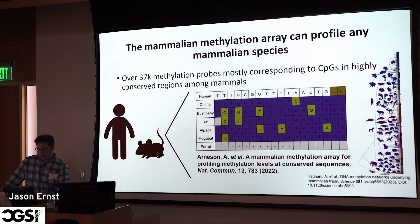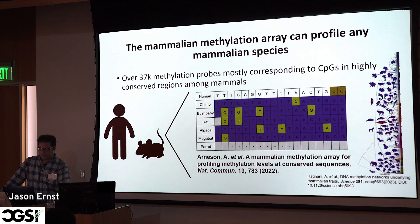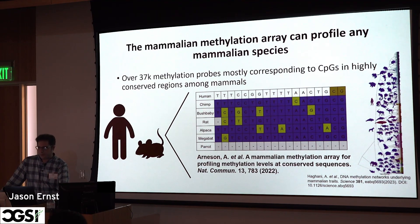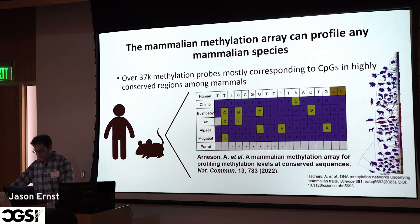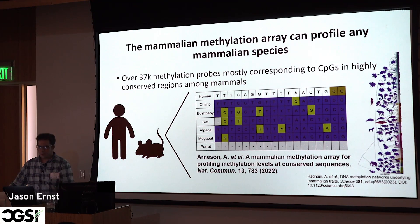This led to the challenge of how we could use microarray technology for other mammals — for example, for epigenetic clock analyses requiring highly quantitative measurements. This led to a collaboration with Steve Horvath, who approached me about designing an array to measure DNA methylation across species. In collaboration with a former PhD student, Adriana Artis, we designed an array to measure DNA methylation at around 36,000–37,000 CpG sites in the human genome that were well-conserved across mammalian evolution.